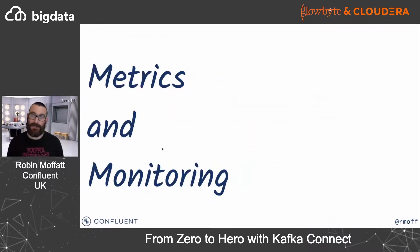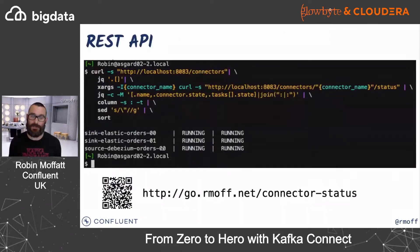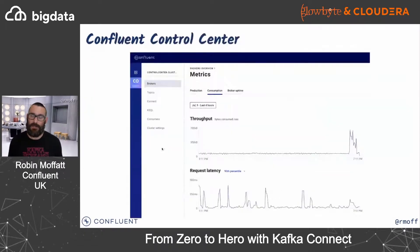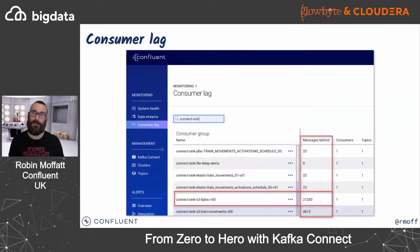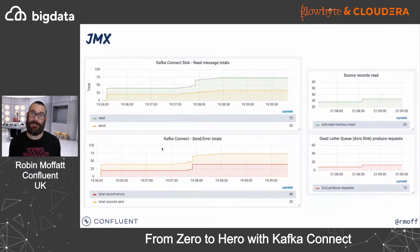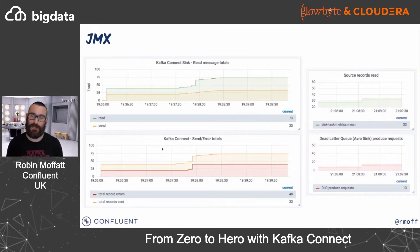For monitoring, you can use the REST API — as shown in the demo — to get information about throughput and lag. You can use Confluent Control Center for a higher-level view. There are also JMX metrics for lower-level details. A good example is the dead letter queue: there shouldn't be any messages on it, but if there are you want to instrument that — set an alert using the particular JMX metric if you see messages on the dead letter queue.